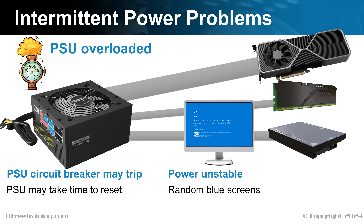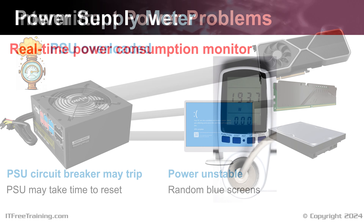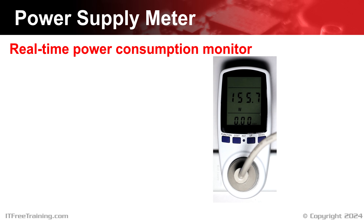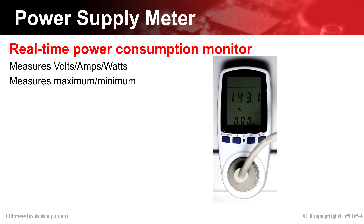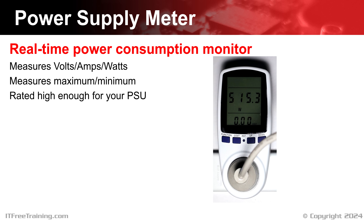As power supplies age, they become less capable of outputting power. This is one reason why a PSU may start becoming overloaded when previously there was no problem. You can plug a power supply meter between your power outlet and computer to measure voltage, amps, and watts in real time, or set it to report maximum and minimum values. Before purchasing one, make sure it is rated high enough for your PSU. If you start having random blue screens or crashes when the power draw is high, it may indicate the power supply cannot provide enough power.